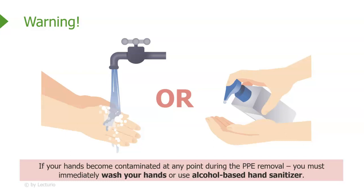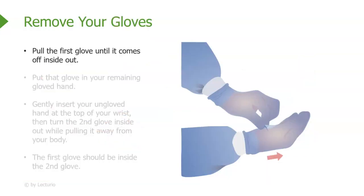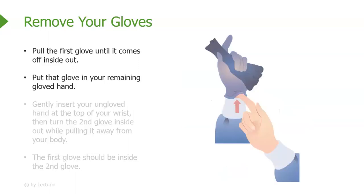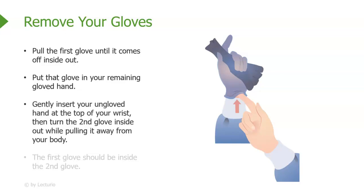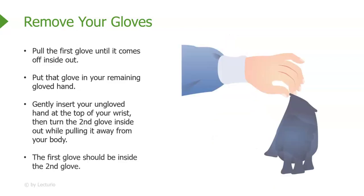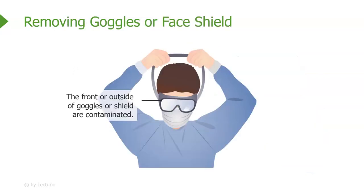To remove your gloves, pull the first glove off until it comes off inside out, then hold that glove in your remaining gloved hand. Gently insert your ungloved hand at the top of the wrist and turn the second glove inside out while pulling it away from your body. Always remove PPE away from your body. Using this method, the first glove should end up inside the second glove.